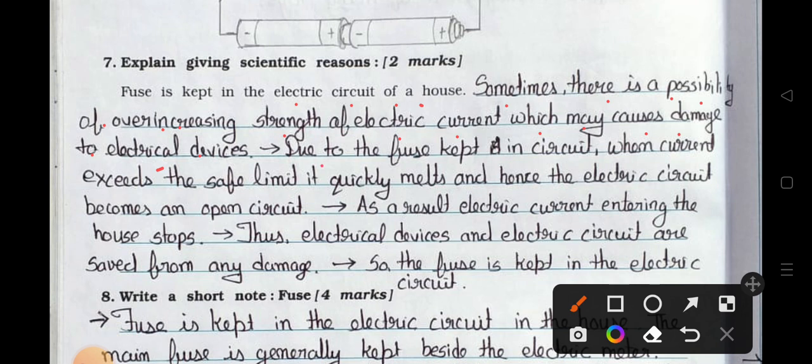Due to the fuse kept in a circuit, when current exceeds the safe limit it quickly melts and hence the electric circuit becomes an open circuit. As a result, electric current entering the house stops. Thus electrical devices and electric circuit are saved from any damage, so the fuse is kept in the electric circuit.